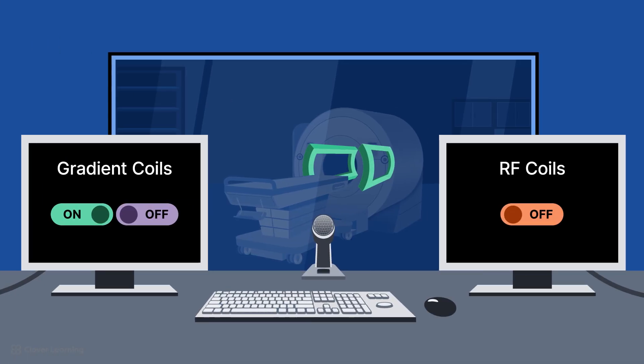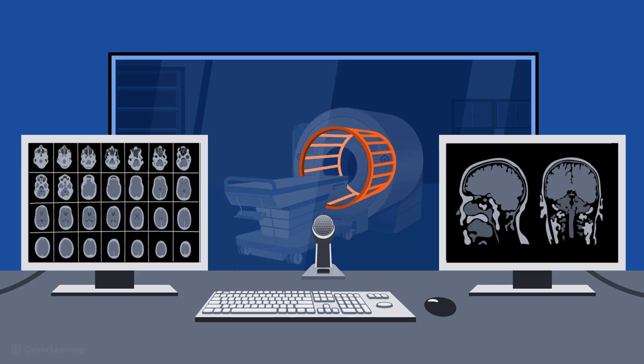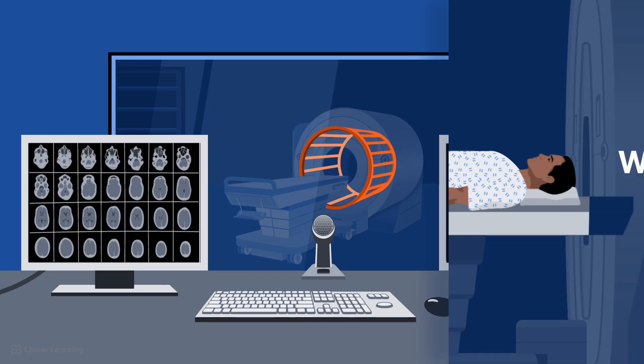The computer system tells the MRI scanner when to turn on or off the gradient and RF coils, which allows for the creation of pulse sequences used for MR imaging. The computer system is also responsible for processing the data from the MR signal and generating an image.